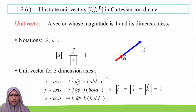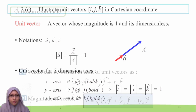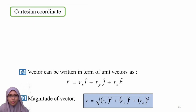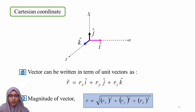Unit vectors for three dimensions exist. The x-axis is represented by i hat, the y-axis by j hat, and the z-axis by k hat. A vector can be expressed in Cartesian form consisting of x, y, and z components. The unit vector in x is i hat, in y is j hat, and in z is k hat. If we have a vector within these three axes, we can write it in component form, and the magnitude is calculated using the standard formula for 3D magnitude.